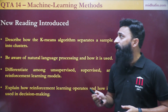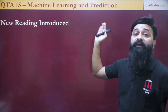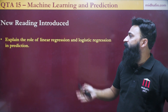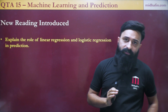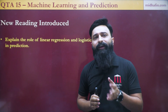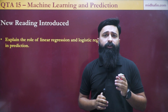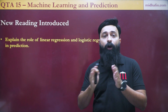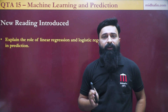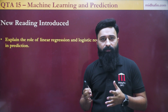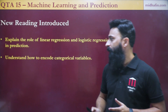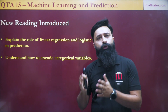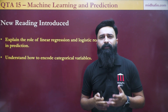The second major addition is QTA 15, Machine Learning and Prediction. The first learning objective is the role of linear regression and logistic regression in prediction. In financial models, categorical variables with two possible outcomes are quite common. Logistic regression uses a cumulative logistic function transformation, resulting in the output being bounded between 0 and 1, making it convenient to model the probability of such categorical variables. The second learning objective is the encoding of categorical variables — encoding is the process of transforming non-numerical information into numbers, also known as mapping.